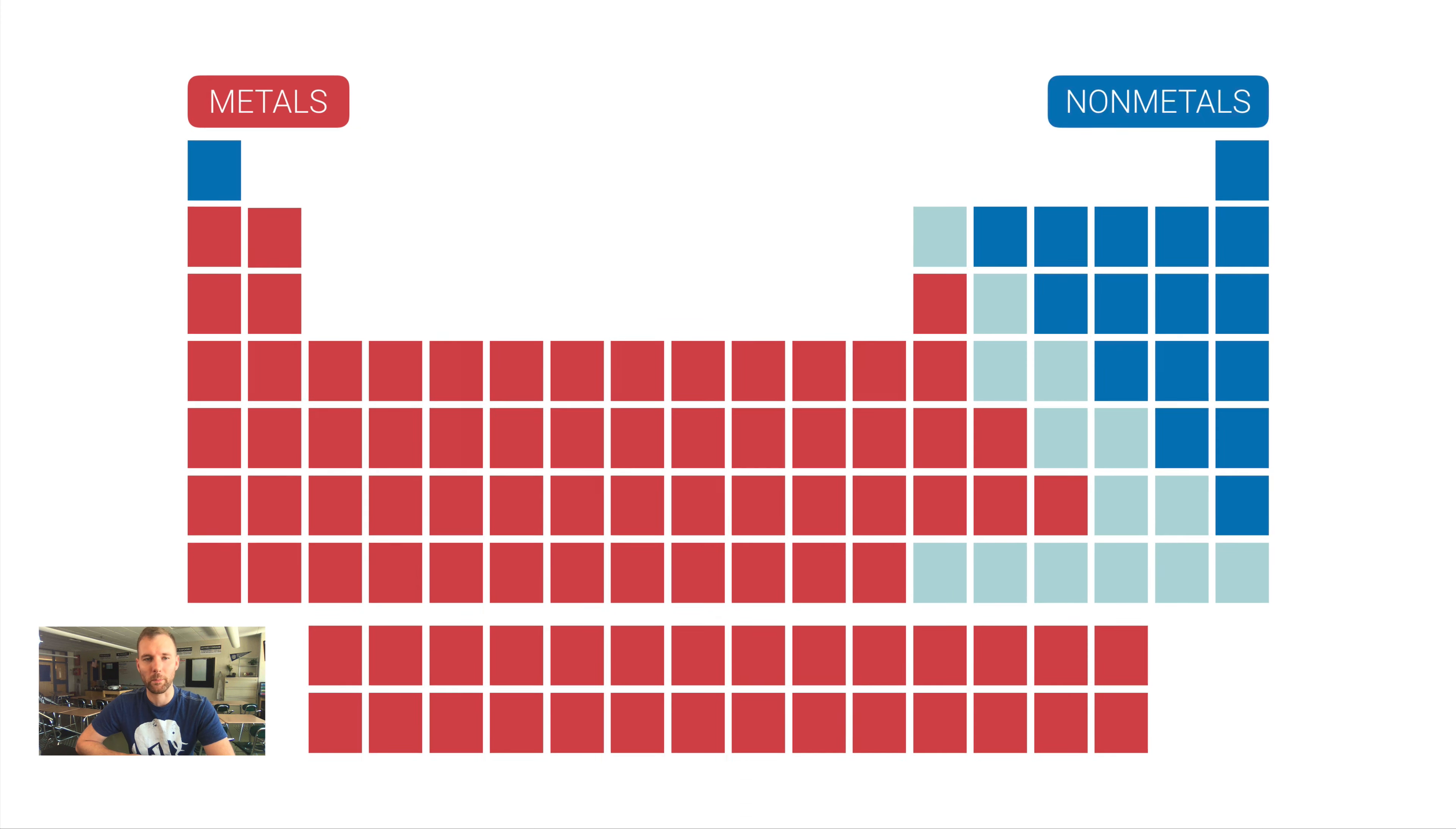A lot of the periodic table is what we call non-metals, and then some of these elements between here are what we call metalloids or semi-metals. They can exhibit characteristics of a metal or a non-metal depending on the circumstance, so they're kind of strange.